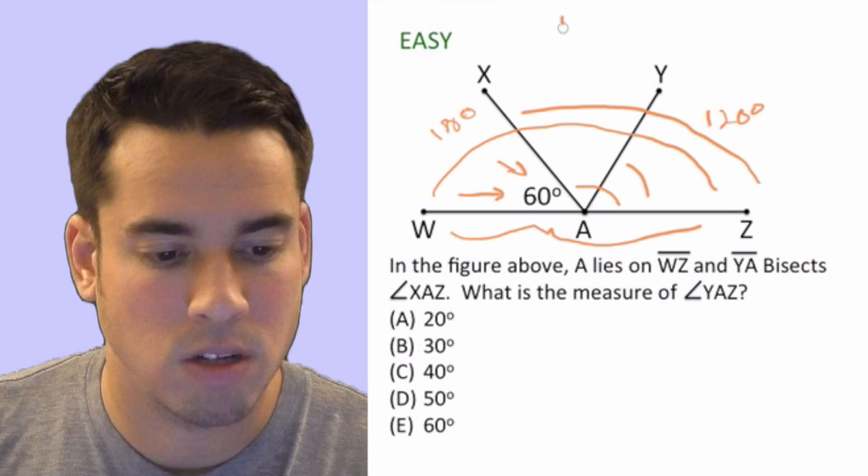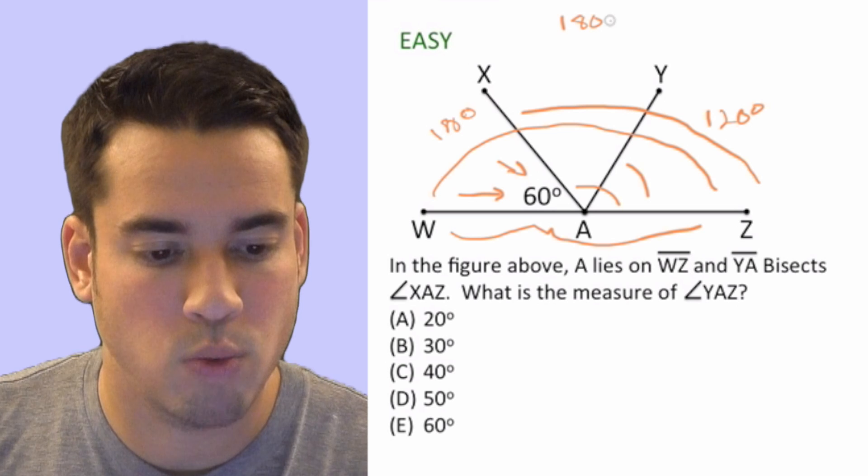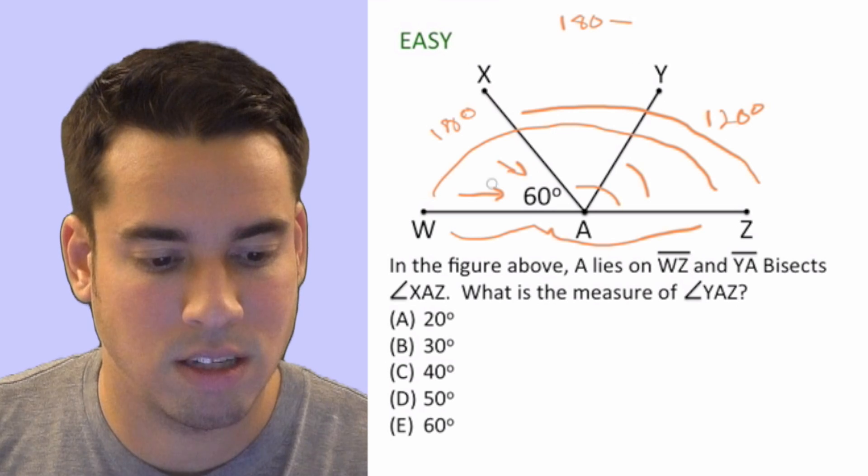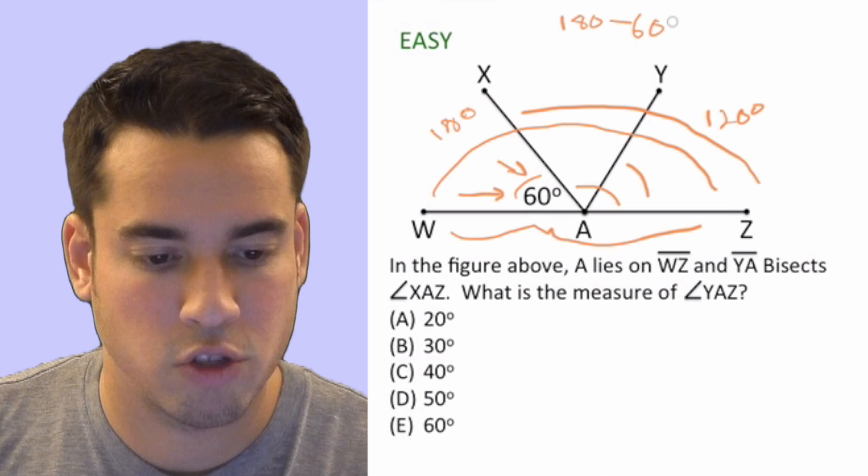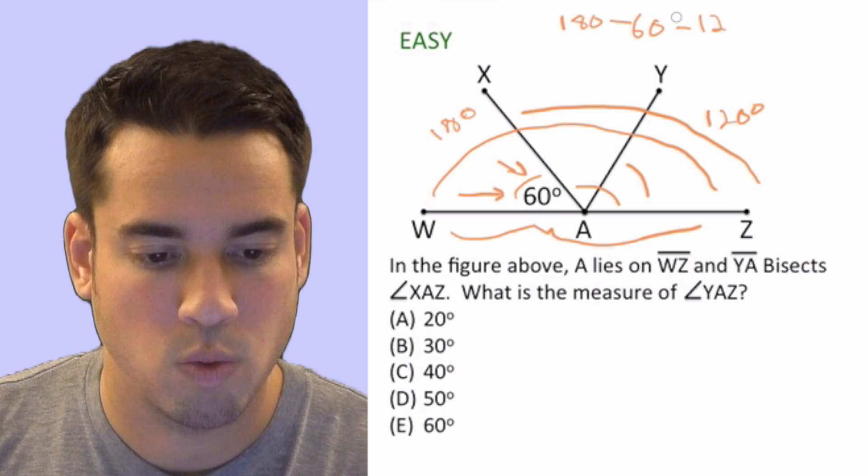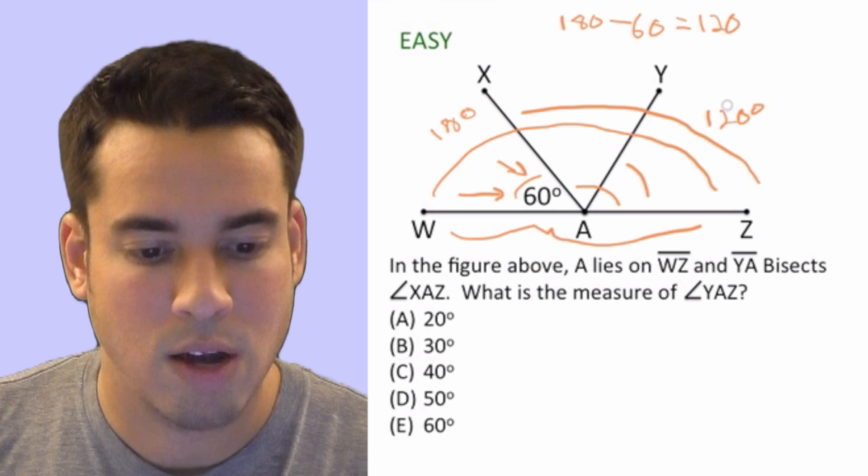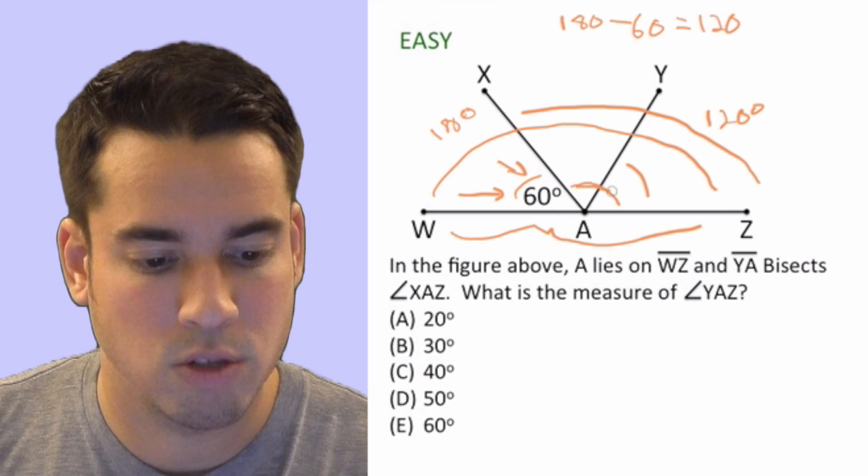How did I get that? I took the total 180 minus what we already know, which is 60, which is this angle here. So minus 60, 180 minus 60 is 120. So now we know that this whole angle is 120.